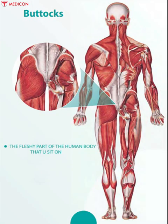Buttocks: the fleshy part of the human body that you sit on is called the buttocks. These are located on the posterior of the pelvic region and comprise a layer of fat.